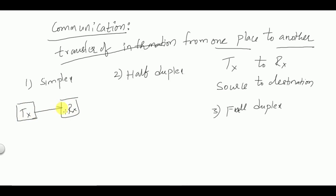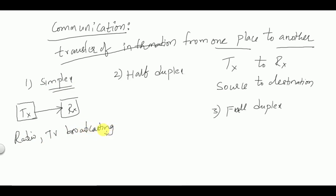In simplex communication, there is transfer of information from transmitter to the receiver only, but there is no feedback or reply from the receiver end to the transmitter end. For example, radio and TV broadcasting come under the category of simplex communication — we just receive the signals and don't reply to the transmitting stations.